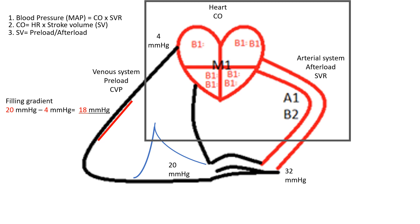This increase in filling gradient is related to our normal negative pressure ventilation, meaning we draw air into the thoracic space by expanding the diaphragm to create a negative pressure within the thoracic space, so air flows from the outside in following its pressure gradient.